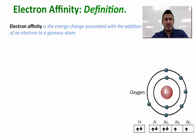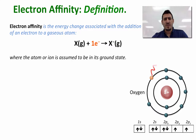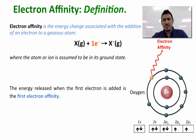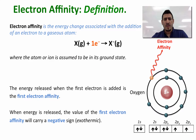Electron affinity by definition is the energy change associated with the addition of an electron to a gaseous atom. The energy released when the first electron is added is called the first electron affinity. When energy is released, the value of the first electron affinity will carry a negative sign, which means it's an exothermic process. However, this is not always the case — some first electron affinities have a positive value.